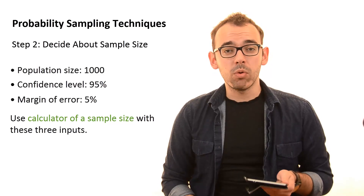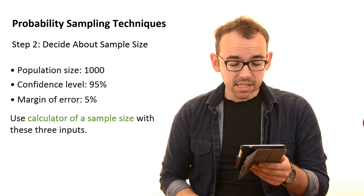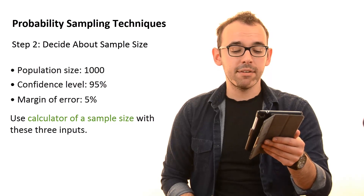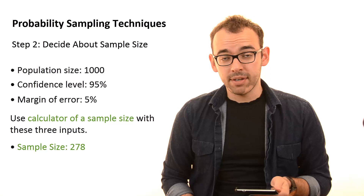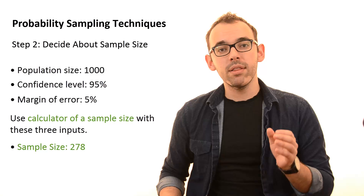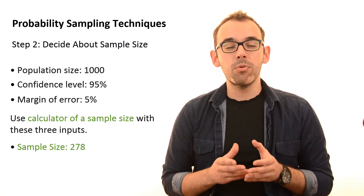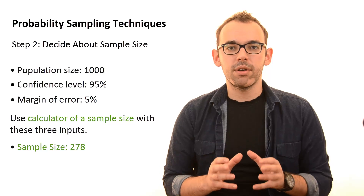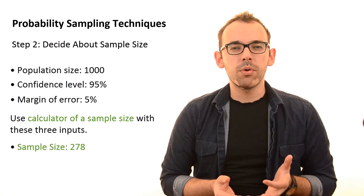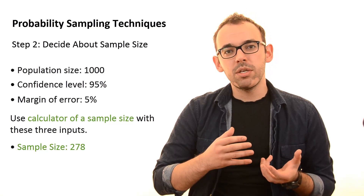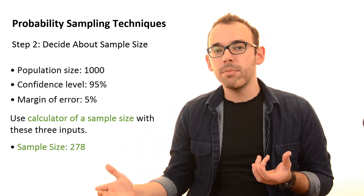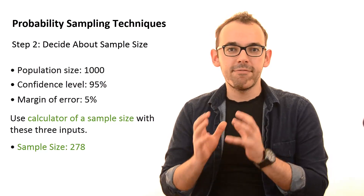Here is an example of how it might look: our population size is 1,000, our confidence level is 95 percent, and our margin of error is 5. The result that this calculator should give us is 278 — we should have 278 cases in our sample so that our sample is constructed properly. The only thing you really need to know is your population size, and then thanks to the confidence level, margin of error, and a sample size calculator, you will be able to get this final result.